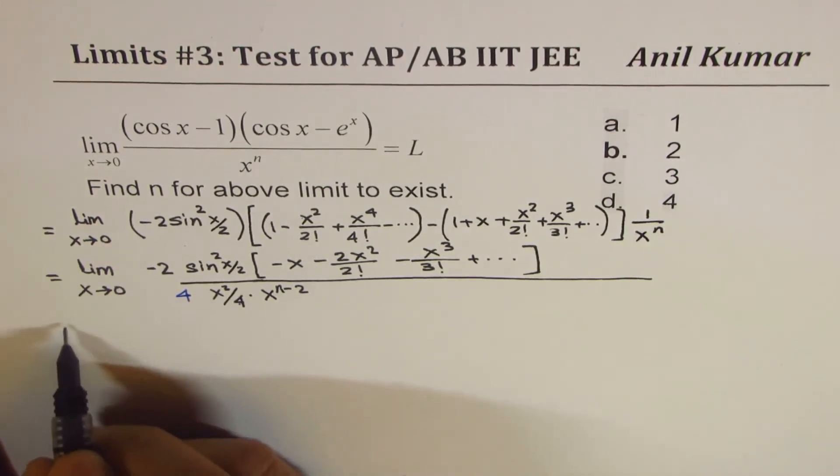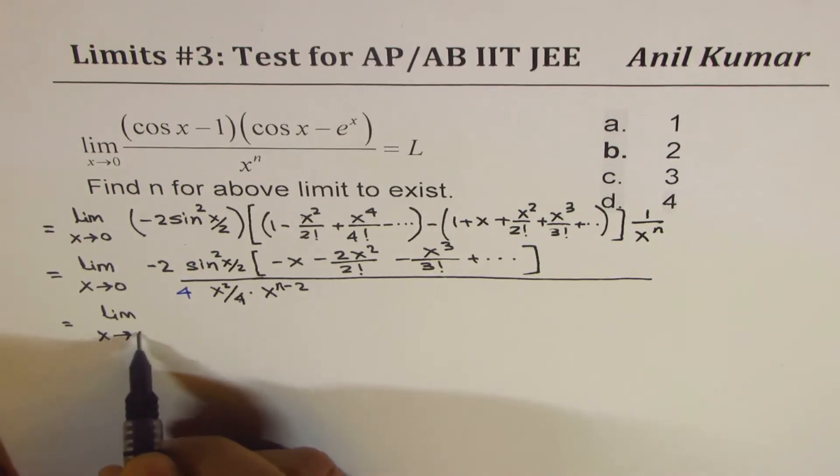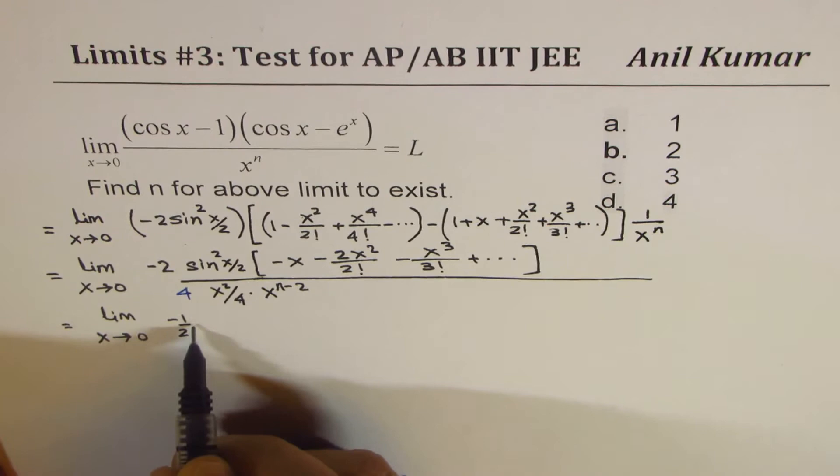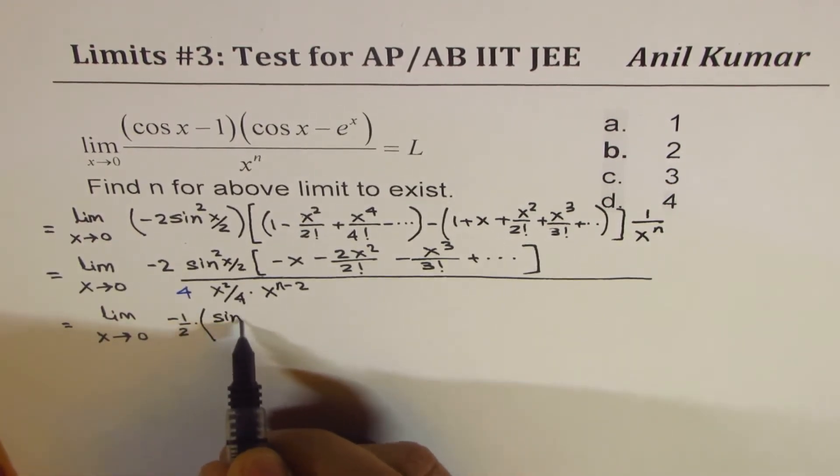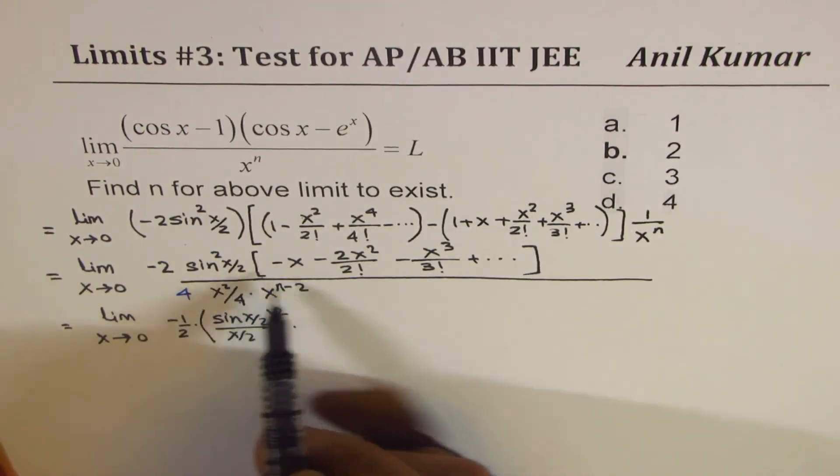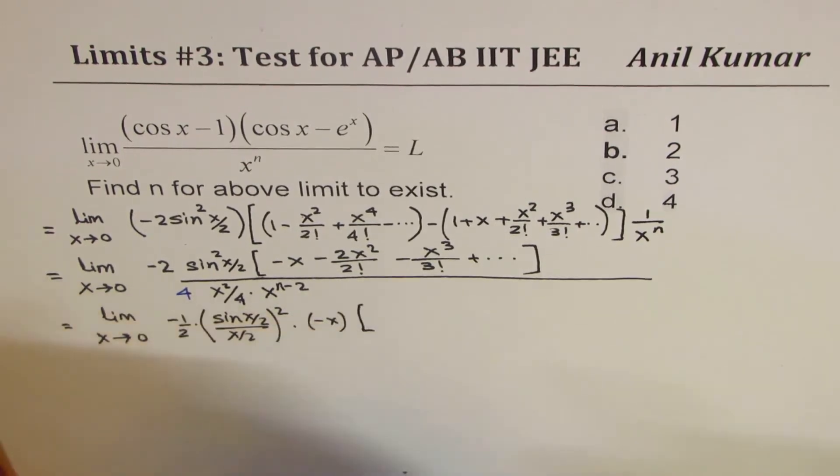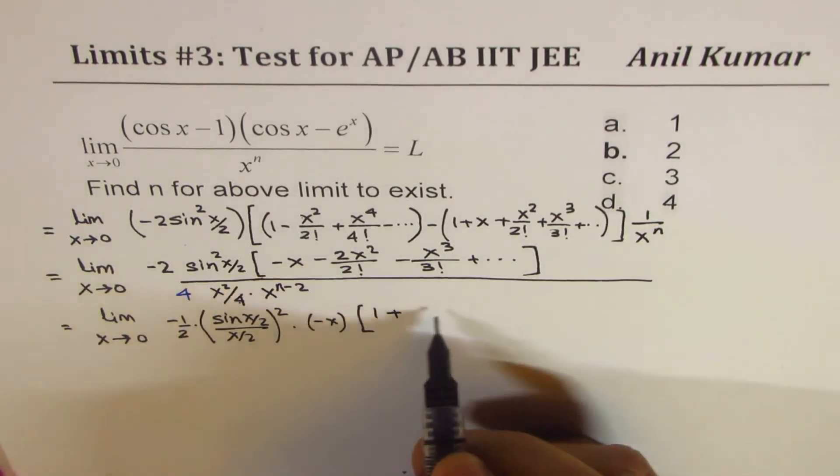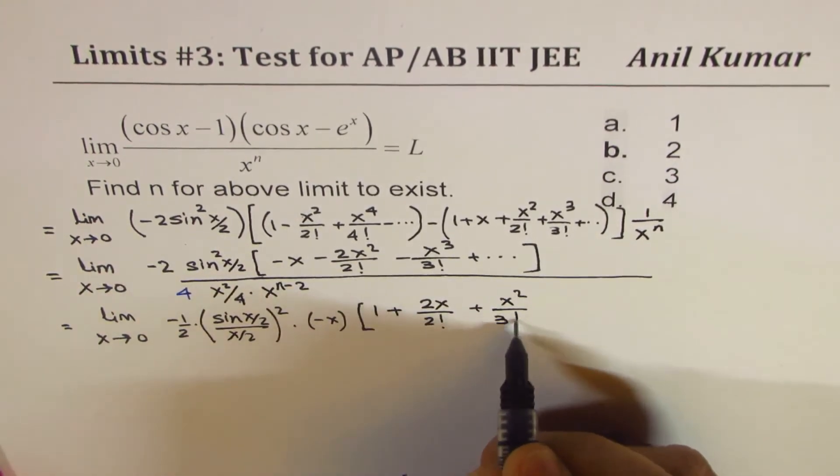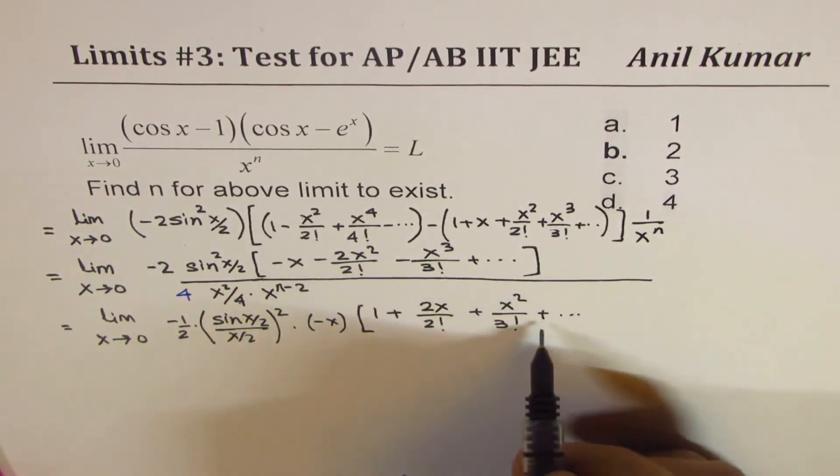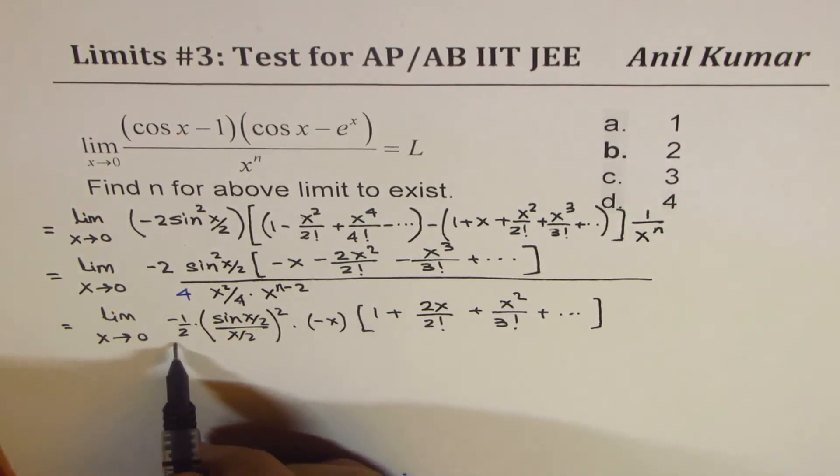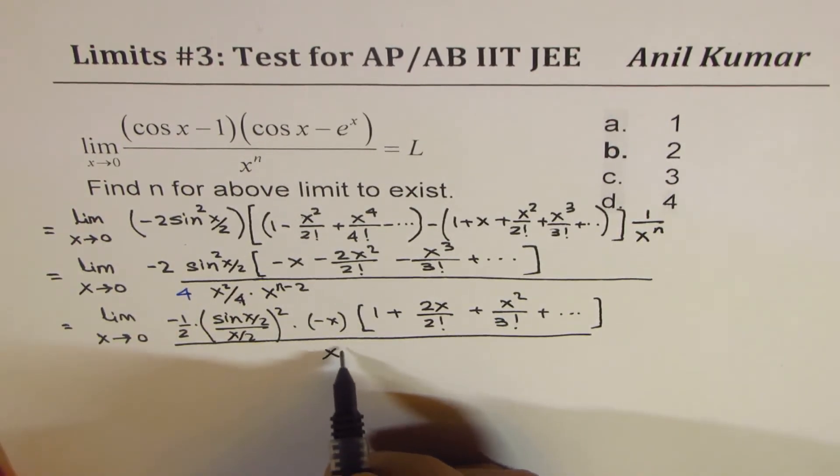So concentrate here. We will now write this as limit x approaches 0. We have -2/4, which could be written as -1/2. So it is -1/2 times. Now we can write this as (sin(x/2)/(x/2))². Now in this series, we could take -x common. So what do you get? You get 1 here, 1 + 2x/2! + x²/3! and so on. Divided by x^(n-2). One of these x's cancel because of this x. So I could write this as x^(n-3).